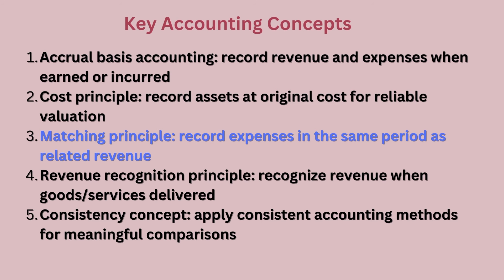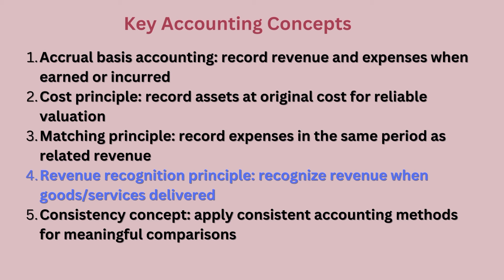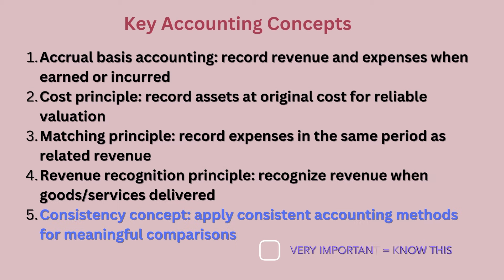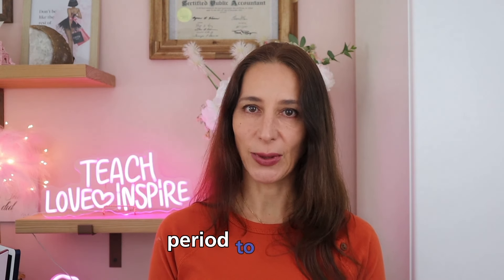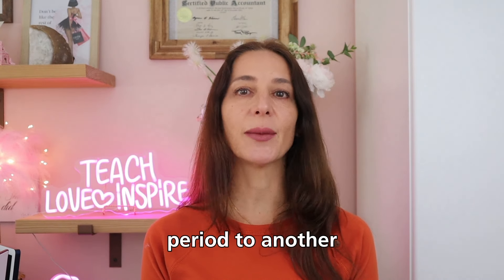The fourth principle is the revenue recognition principle, which states that revenue should be recognized when it is earned and realizable. This means that revenue should be recorded when goods or services are delivered to customers and payment is reasonably assured. The fifth principle is the consistency concept — GAAP requires companies to apply consistent accounting methods from one period to another, allowing stakeholders to compare financial statements over time and make meaningful conclusions about a company's performance.